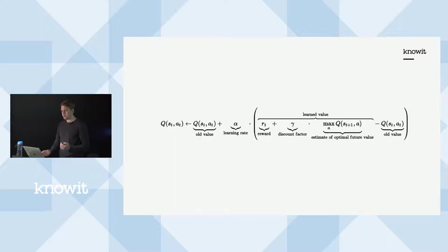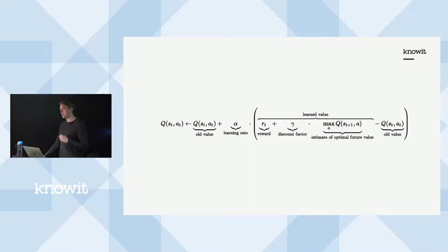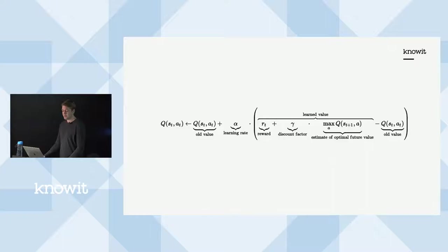First we introduce the Q-learning update formula. You have the Q value for state t and action t. You calculate it by taking the old value — initialized to zero — then multiplying a learning rate parameter by the reward received from the environment, plus a discount factor times the maximum Q value of the next state possible, and then subtracting the old value to normalize.